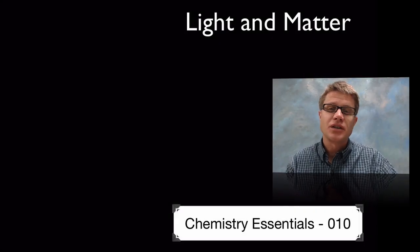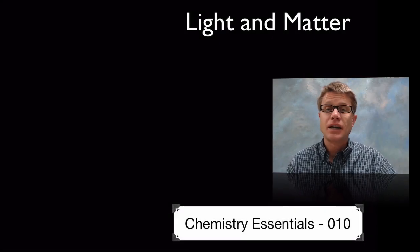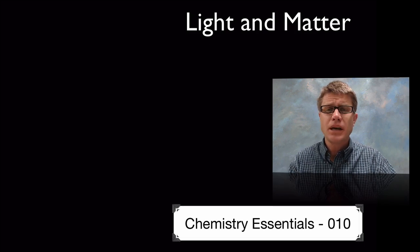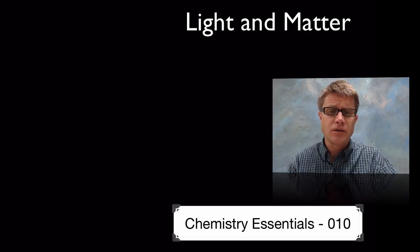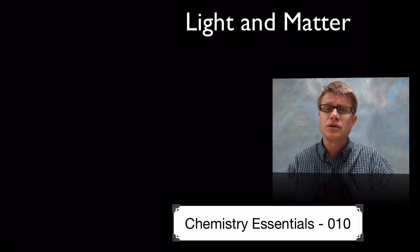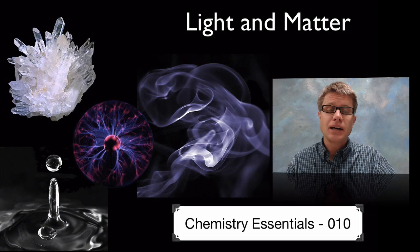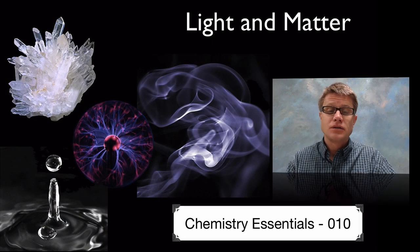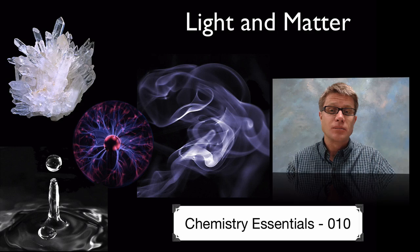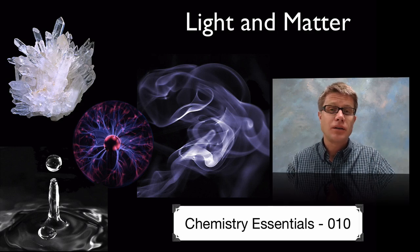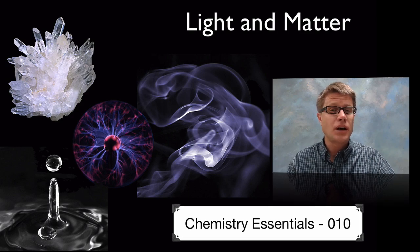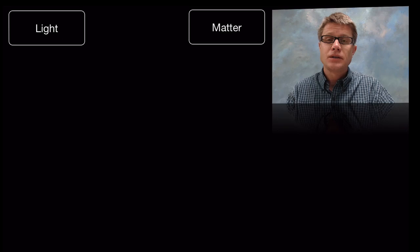Hi, it's Mr. Andersen and this is Chemistry Essentials video 10 on light and matter. Matter is what we're made of, but I've got some matter on the screen and you can't see it because there's no light. Once I add light we start to see matter - solid, liquid, gas, and plasma. Until we have light we really can't probe matter and figure out what it's made up of.